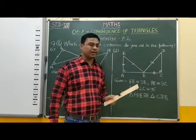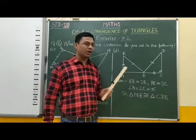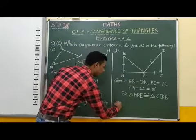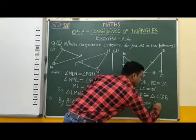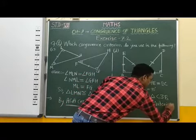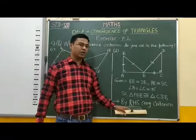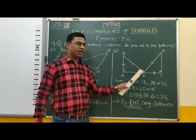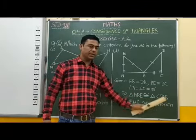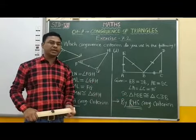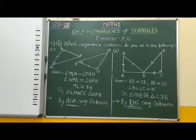Therefore, by RHS congruence criterion, these two triangles are congruent. We can write: by RHS congruence rule, triangle ABE is congruent to triangle CBB. Students, I hope this is clear to you. Thank you.